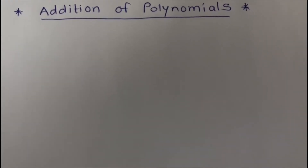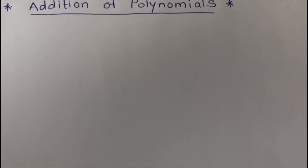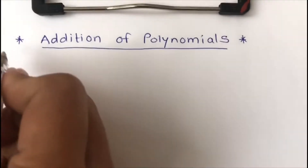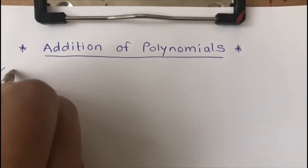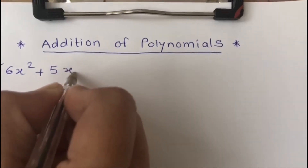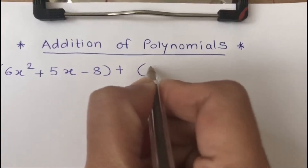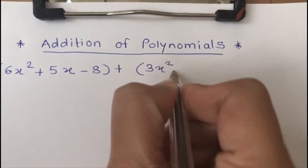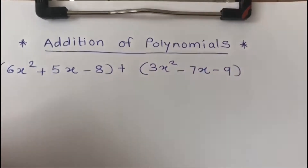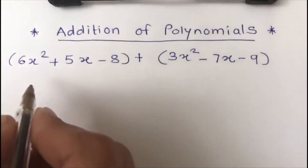Hello friends, today we are going to take a look at how to add polynomials. Let's take the first example: 6x squared plus 5x minus 8, plus 3x squared minus 7x minus 9.